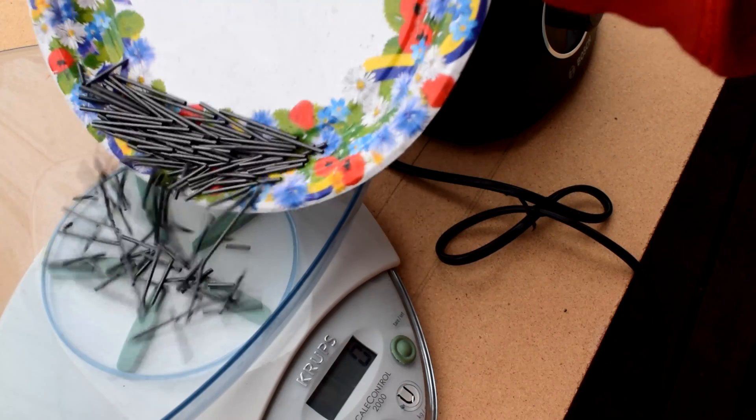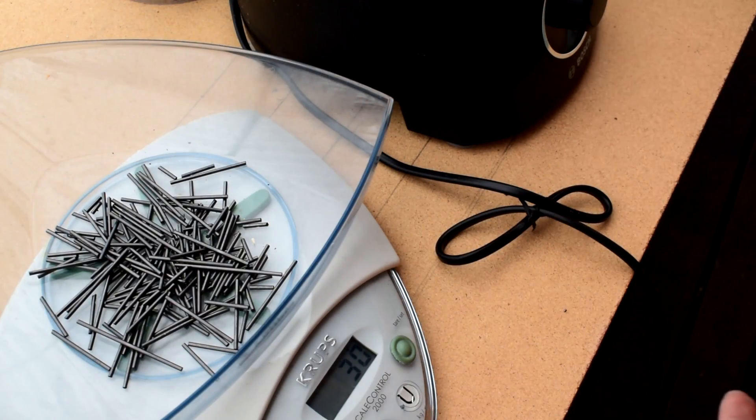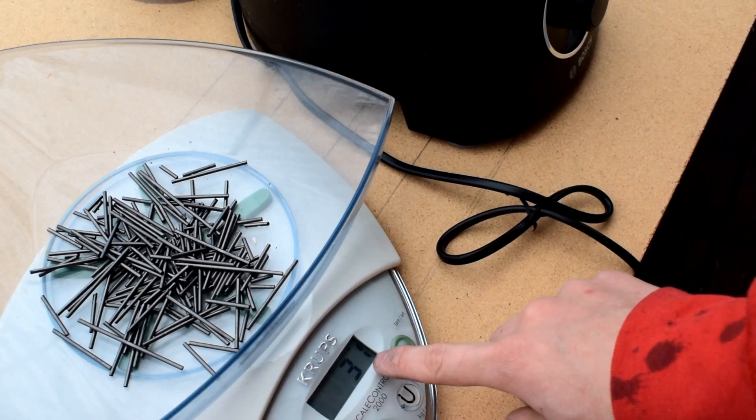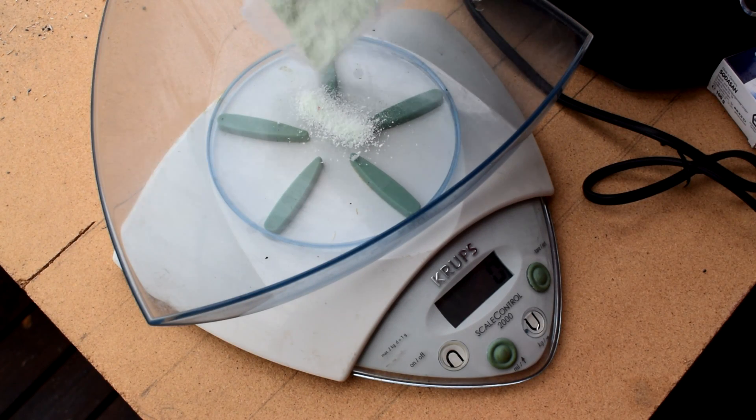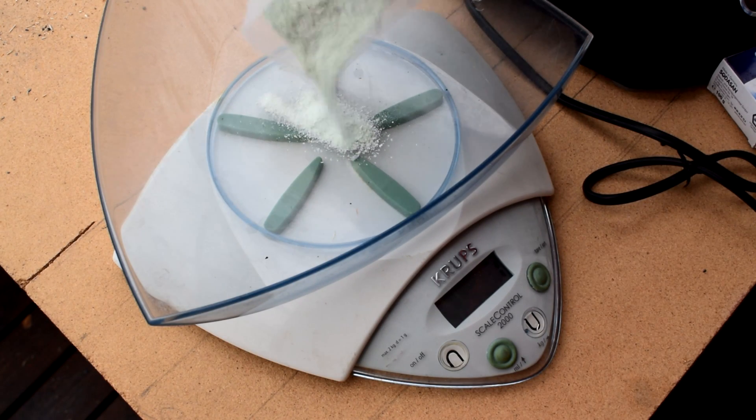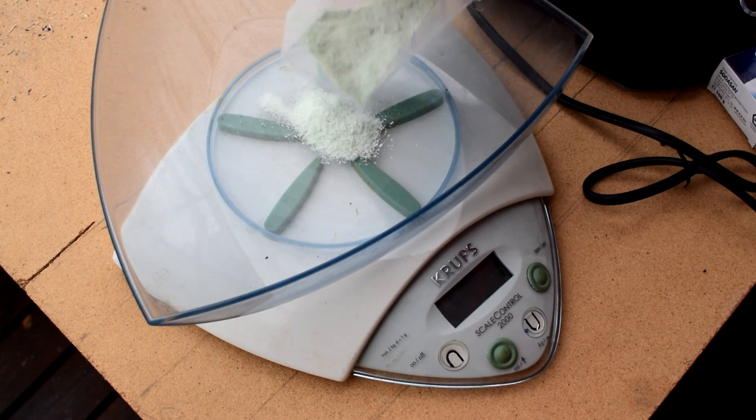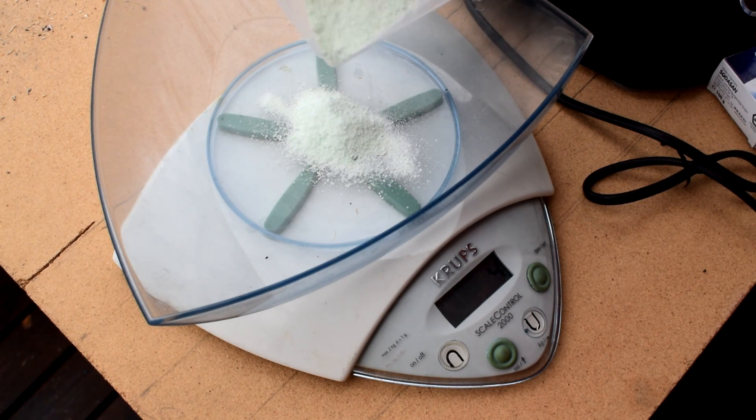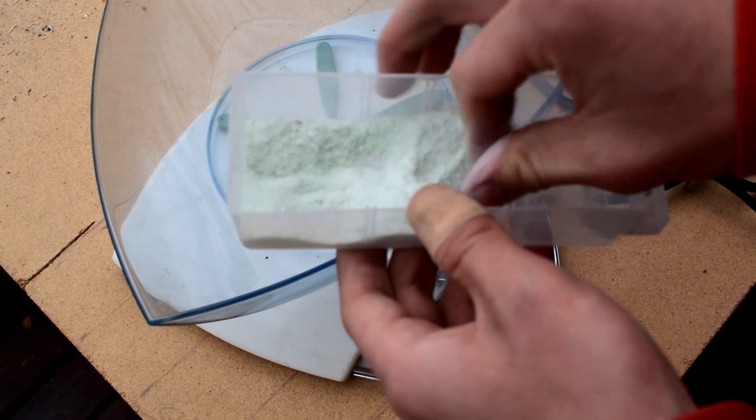After extracting all graphite, measure them. I have about 31 grams. The ratio is one part gall soap to eight parts graphite. So 31 grams divided by eight is a little less than four grams of gall soap. This is just some I've ground it down.